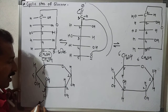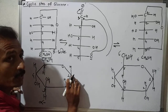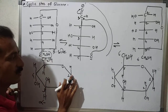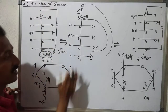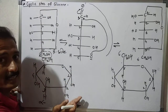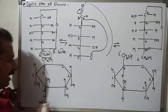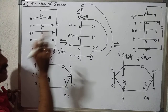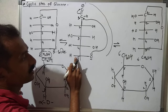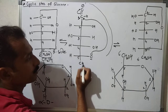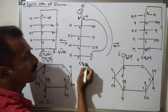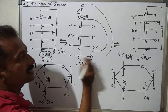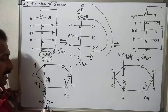For alpha, the anomeric carbon's OH is on the right side — that is the alpha side. In open chain structure of glucose, the lowest chirality center (carbon number 5) has OH on the right side.